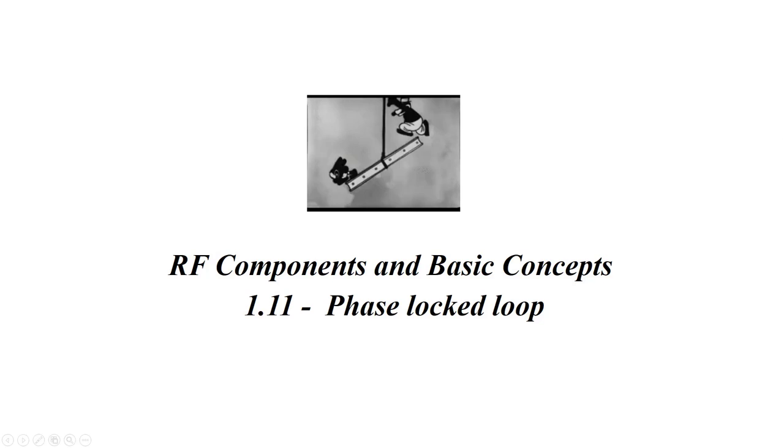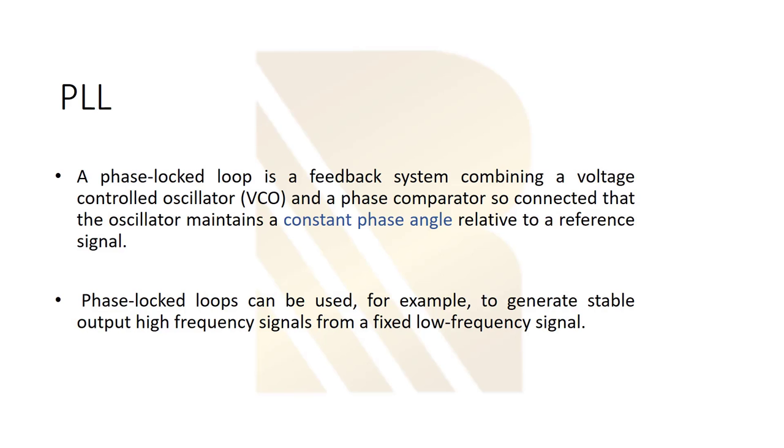In this topic we are going to talk about phase locked loop, or PLL. A phase locked loop is a feedback system combining a VCO and phase comparator so connected that the oscillator maintains a constant phase angle relative to the reference signal.